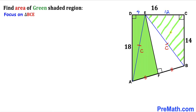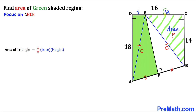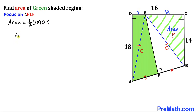Now let's calculate the area of right triangle BCE. Using the area formula: Area = ½ × base × height. Base is 12 and height is 14, so Area = ½ × 12 × 14 = 84 square units.